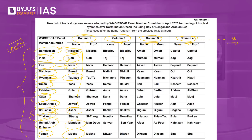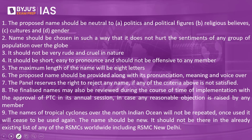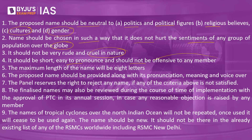There are some principles that every country must follow before naming a cyclone. The proposed name should be neutral — it should not involve politics or political figures, religious beliefs, cultural affiliations, or gender. The name should be chosen in such a way that it does not hurt the sentiments of any group of population across the globe. It should not be rude or cruel in nature. It should be short, easy to pronounce, and not offensive to any member. The maximum length of the name will be eight letters. The proposed name should be provided along with its pronunciation, meaning, and voiceover.